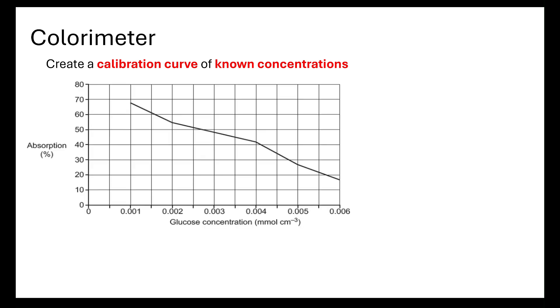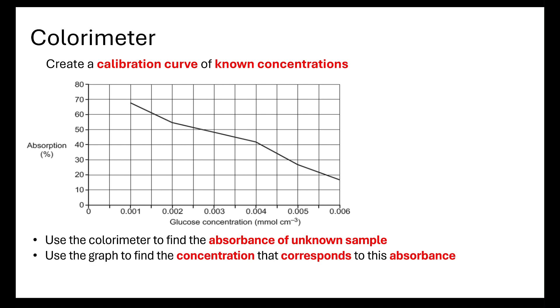Why are we doing this? We do this because in a colorimeter, we want to create a calibration curve of known concentrations. If we do a serial dilution, we've got our known concentrations of our glucose solution. We can then use a colorimeter and graph out what the absorbance percentage was for each of those known concentrations. I'm going to use the colorimeter again, this time to find the absorbance of an unknown sample. If I've got that unknown sample, I can then use the graph to find the concentration that corresponds. If my unknown sample is 48% absorbance, I use that on the graph, that will tell me that my glucose concentration for my unknown sample is 0.003 millimoles per centimeter cubed. How did I get my known concentration of glucose? I did a serial dilution.